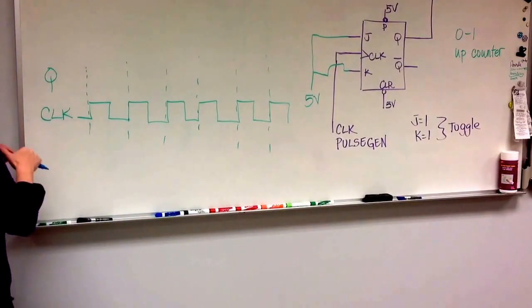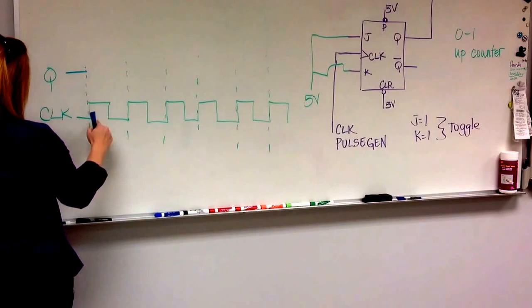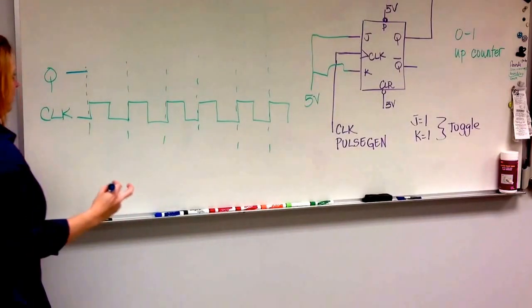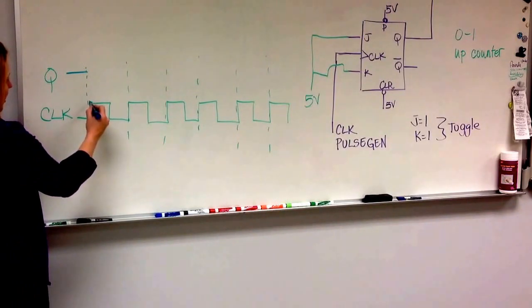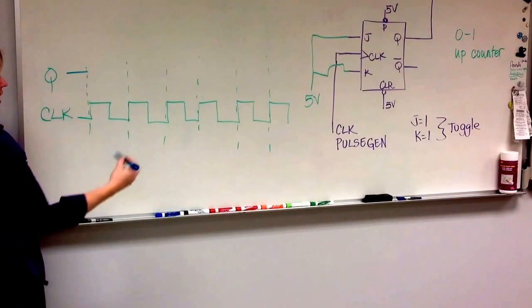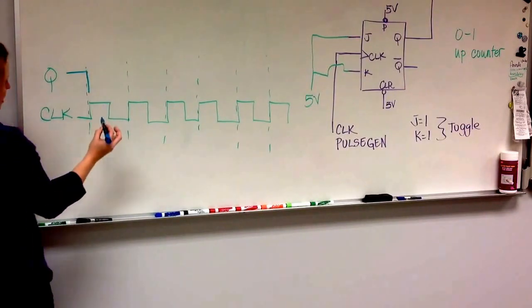How is this going to work? So Q is coming along, and let's just say coming into this edge of the clock it was already at one. And the clock goes high, Q looks at J and K, which are in the toggle state, so it's going to change to this.